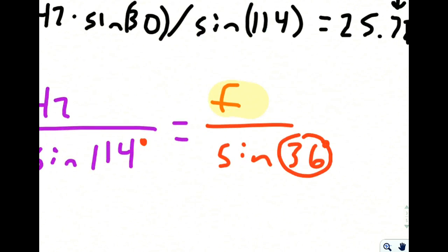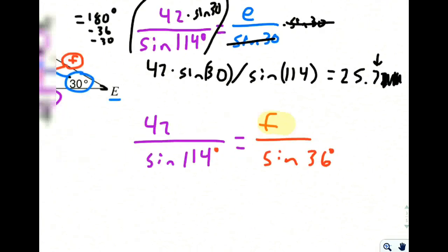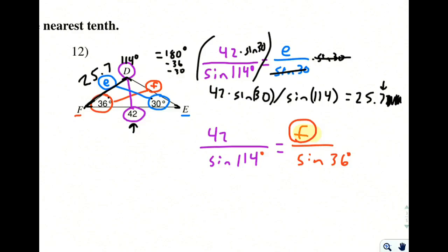the only time that you would take an inverse sine is when you want to get the thing inside of the sine alone, like that 36. If we wanted to get that 36 alone, we would take an inverse sine. We want to get F alone, and F is not trapped inside of a sine, so there's no need to take an inverse. So that's why we're not doing that.